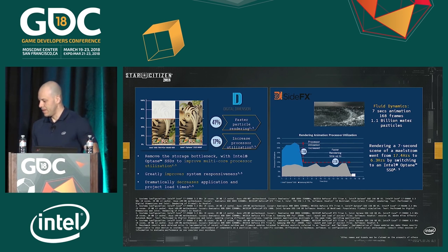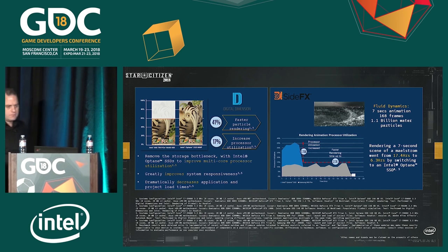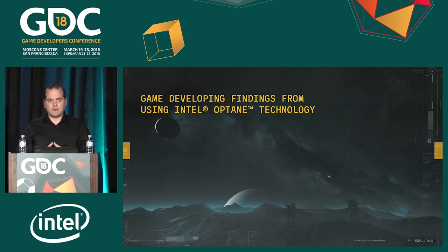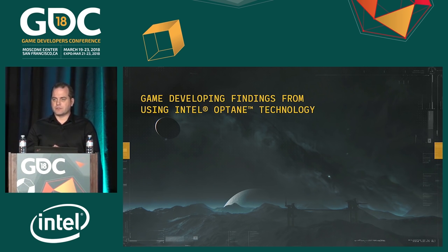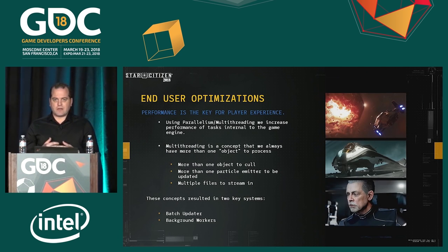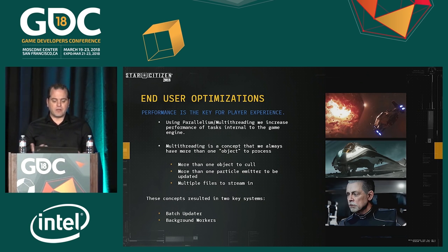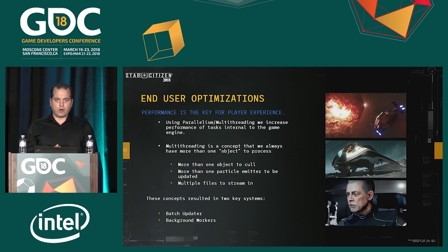The real example we want to share is how Cloud Imperium has seen advances in gaming development using this technology. At Cloud Imperium Games, making Star Citizen and Squadron 42, it was great to be early adopters partnered with Intel — we got a chance to be first boots on the ground, trying different things and seeing what we could do to leverage the technology. The first thing to talk about is end-user optimization — what players are actually seeing.